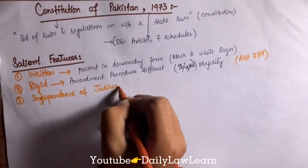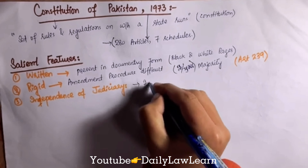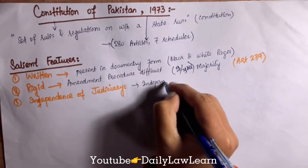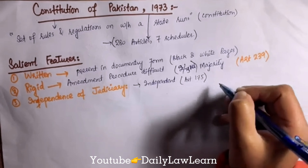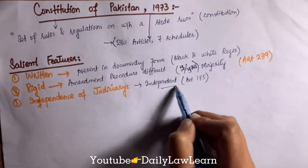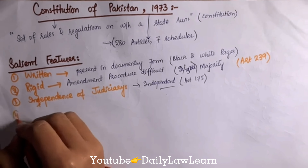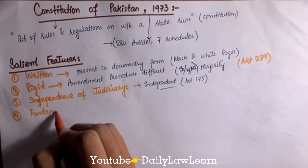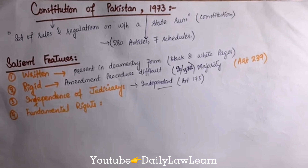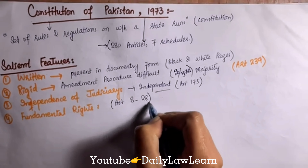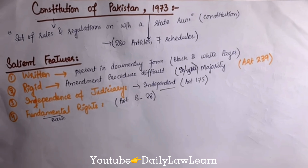The third main feature is independence of judiciary, meaning that the judiciary is independent. Article 175 of the Constitution of Pakistan describes the independence of judiciary. The judiciary is independent of any other authority — it doesn't depend upon any other authority to run itself.